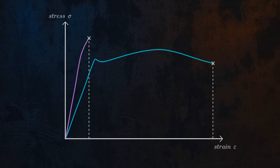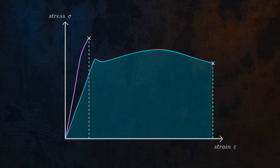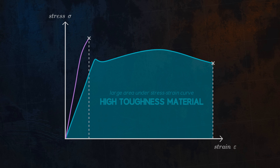Toughness can be calculated as the area under the stress-strain curve. If the area under the stress-strain curve is large, the material will have high toughness, and so will be able to absorb a large amount of energy before fracturing. For a material to have high toughness, it should have a good balance of both ductility and strength. Low strength materials and brittle materials tend to have low toughness.